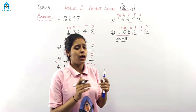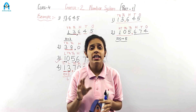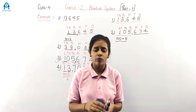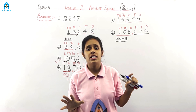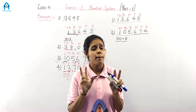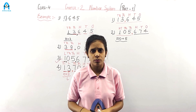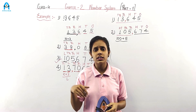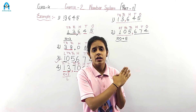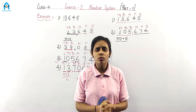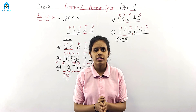Here we learned about both the international and Indian place value systems — how to read five-digit and six-digit numbers in both, and how to use commas. We will learn many more things in our next part. This part is now complete. Please practice at home. Thank you.